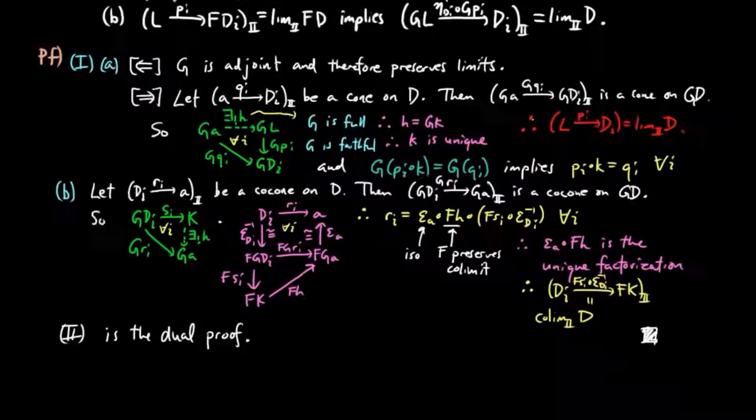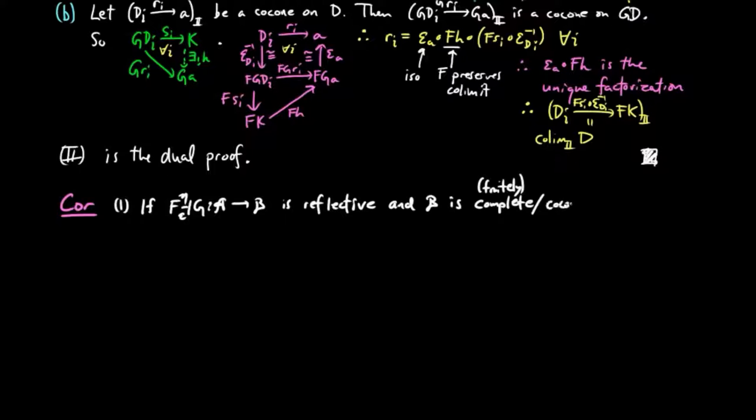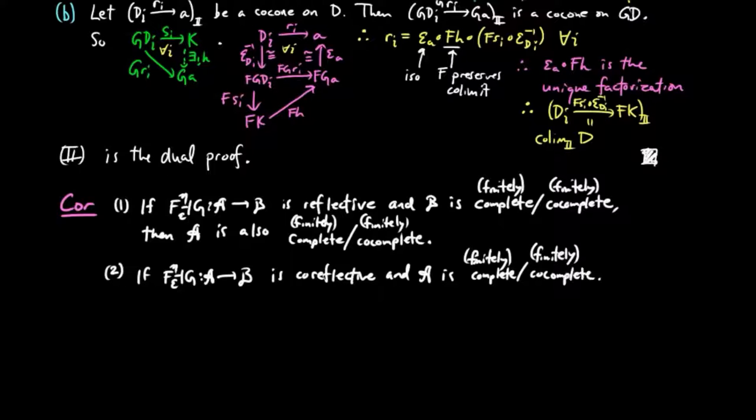As a corollary, we have one: if FG is reflective and B is complete or finitely complete, respectively co-complete or finitely co-complete, then A is complete or finitely complete, respectively co-complete or finitely co-complete. And two is just the dual for co-reflective adjoint situations. And the proof is immediate.